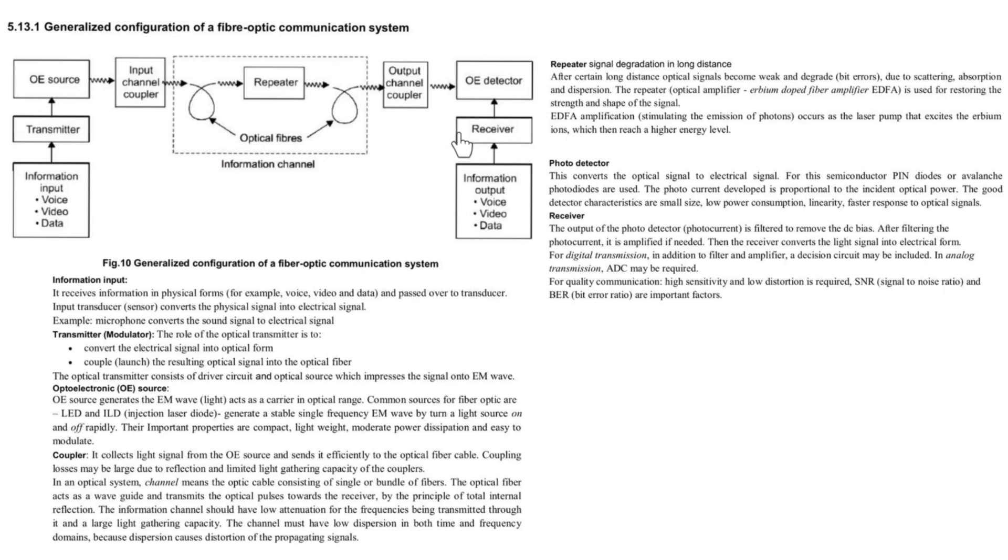Then finally, we have receiver. The output of the photo detector is filtered to remove the DC bias. After filtering the photo current, it is amplified if needed. Since the signal is transmitted for a longer distance, the signal will be amplified if it is necessary. For digital transmission, in addition to filter and amplifier, a decision circuit can be included. In analog transmission, analog to digital conversion can be required. Here the information is similar to the information at the input side.